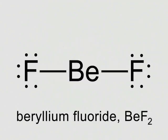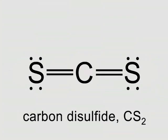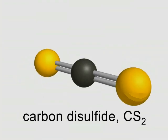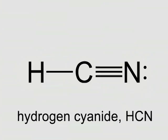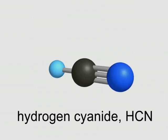Electron groups can be single bonds, as in gaseous beryllium fluoride, double bonds, as in carbon disulfide, triple bonds, as in hydrogen cyanide, or as you will see shortly, lone pairs.